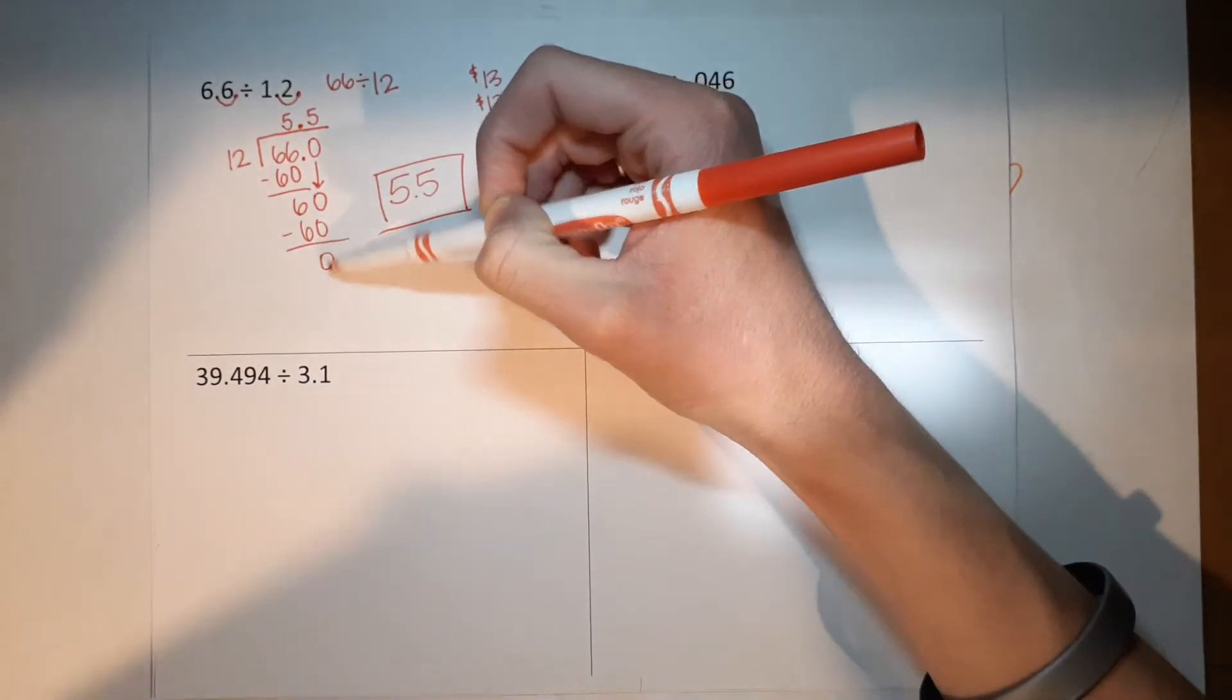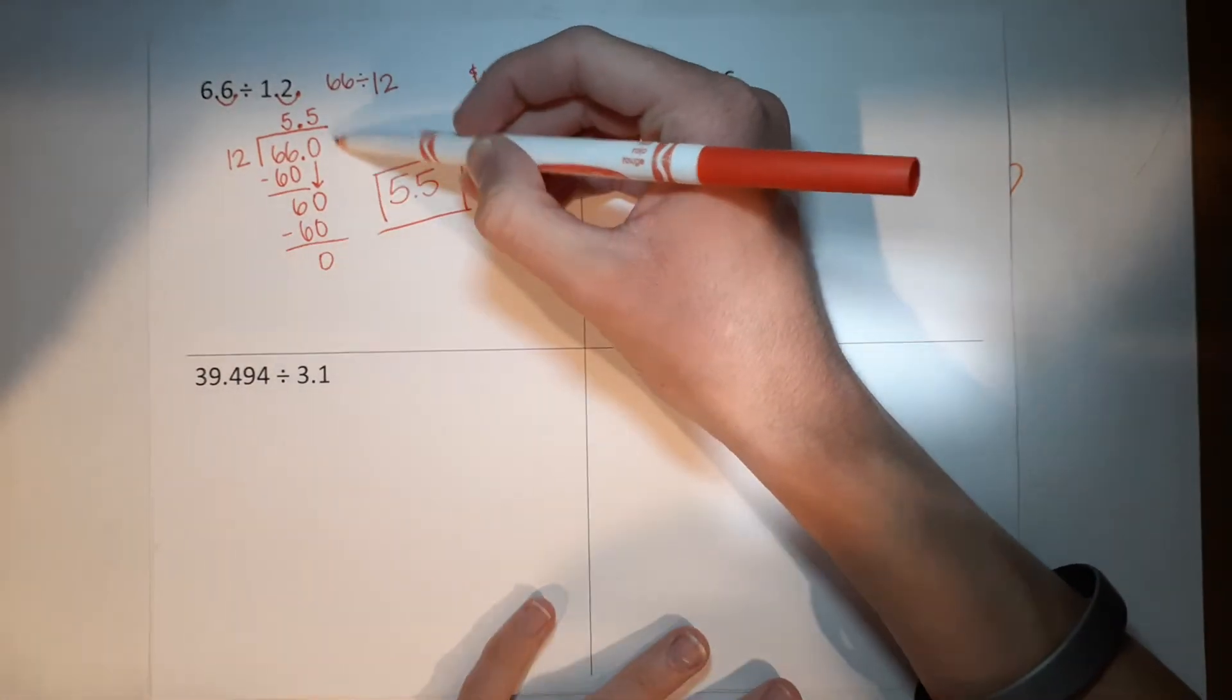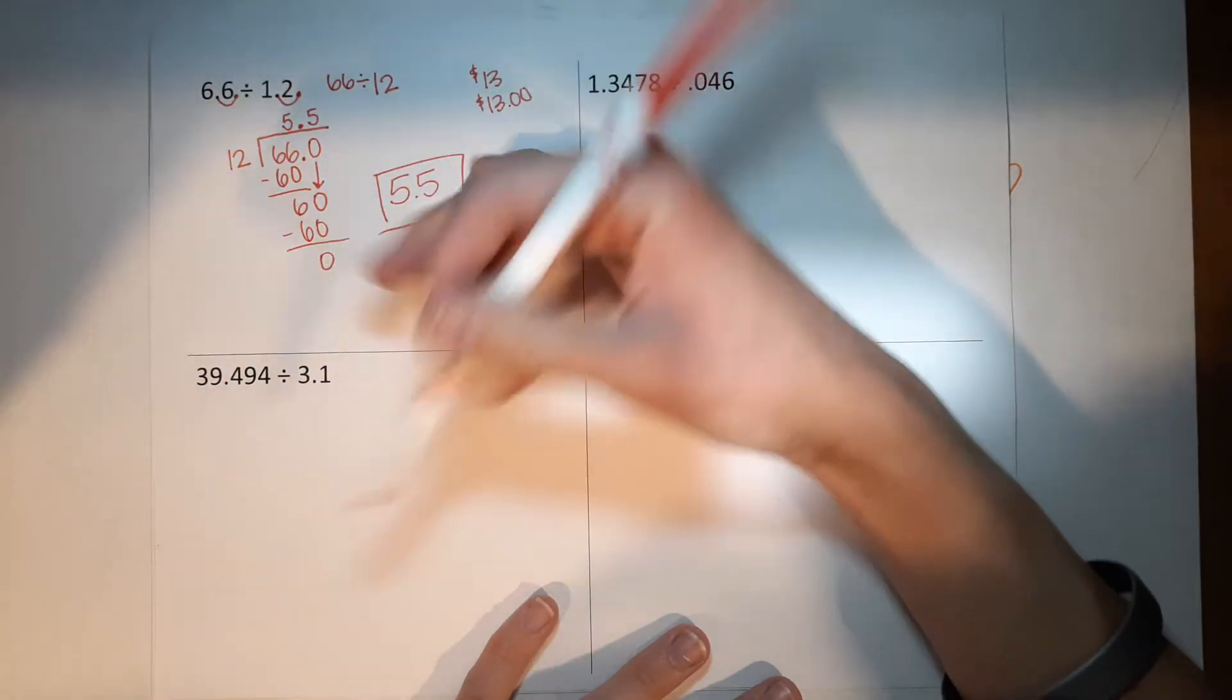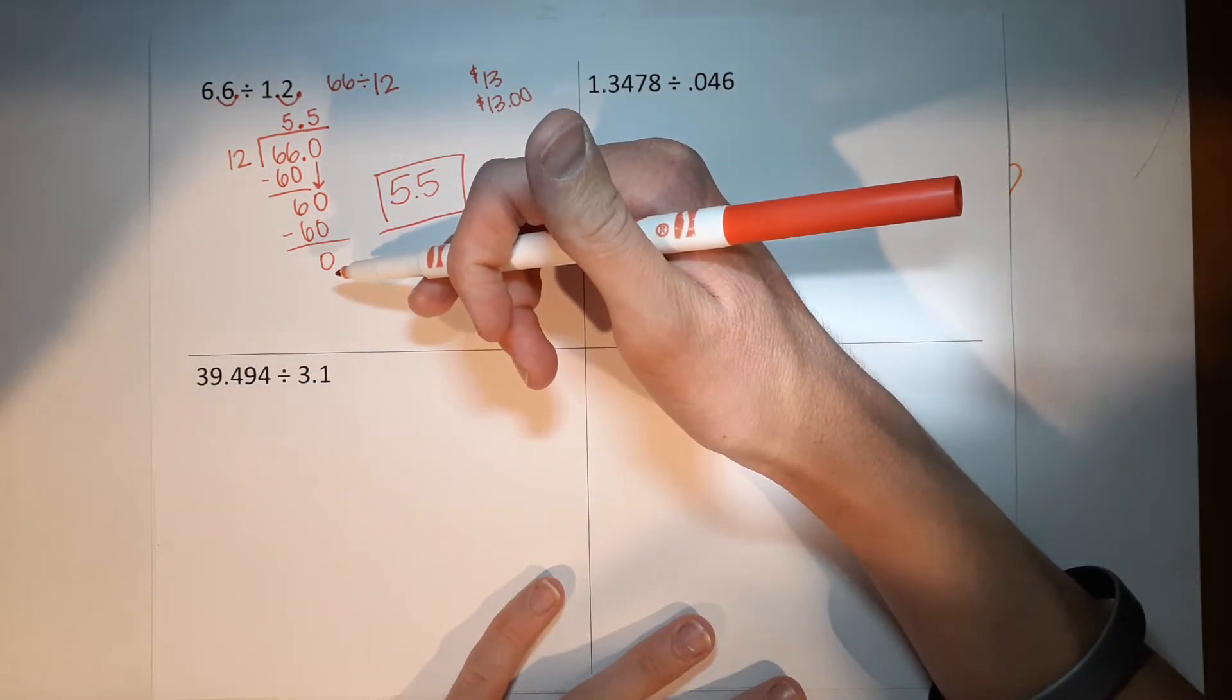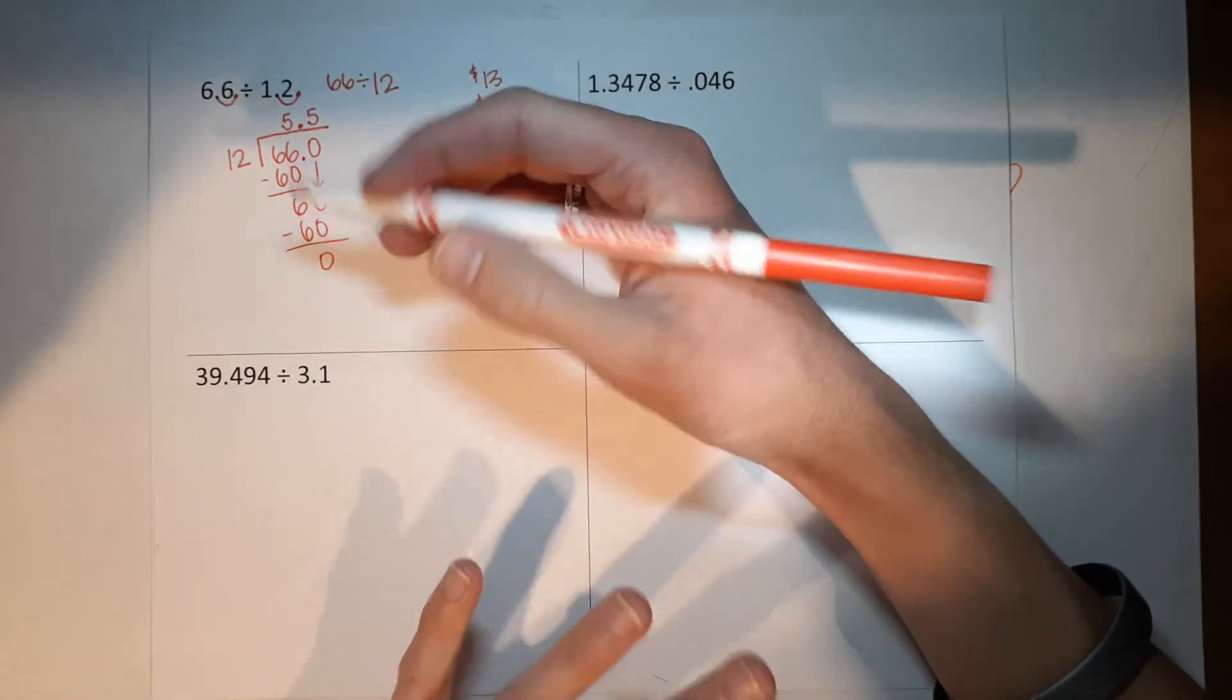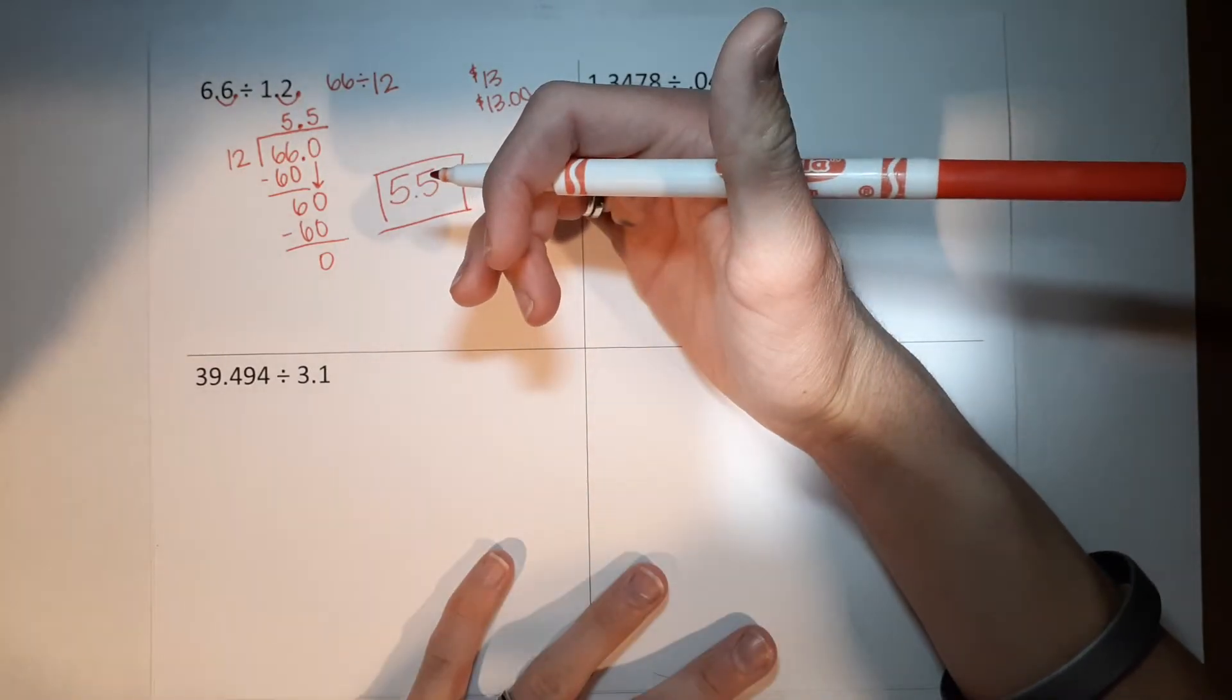Now if this hadn't ended up a zero, if it would have subtracted and still had a number down here, you just add another zero, bring that down. You can do that until you get zero. You just do it because you just love it. So you can keep adding zeros until you get there.